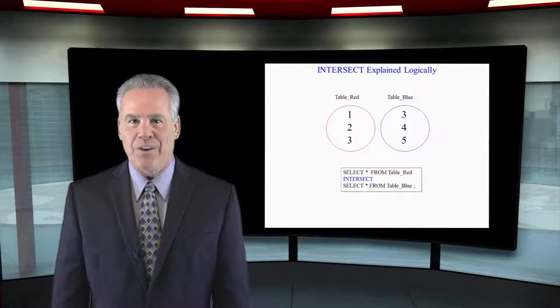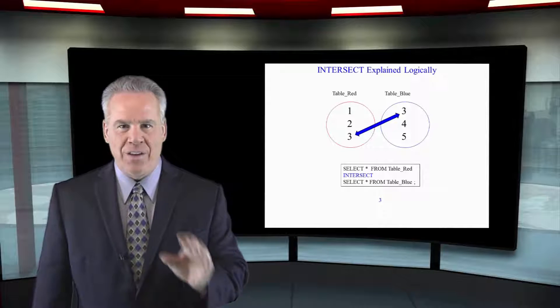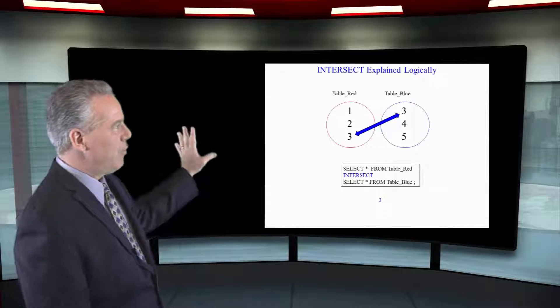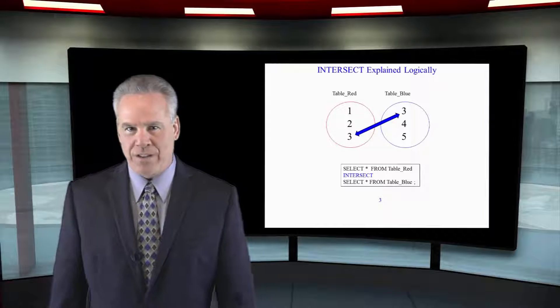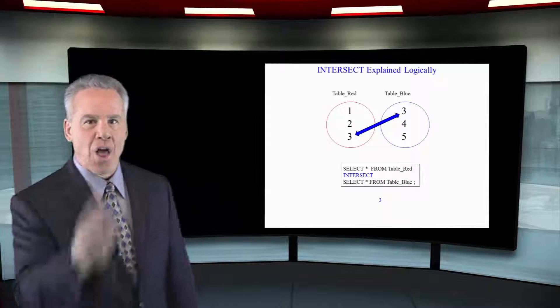What is the answer going to be? On an intersect, you see what matches in table red and table blue, and the only thing that matches is the number three. So, what's coming back? Three.